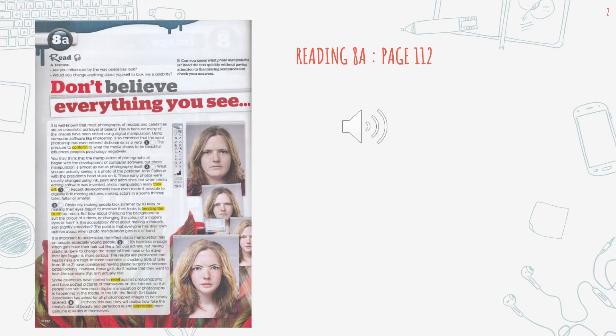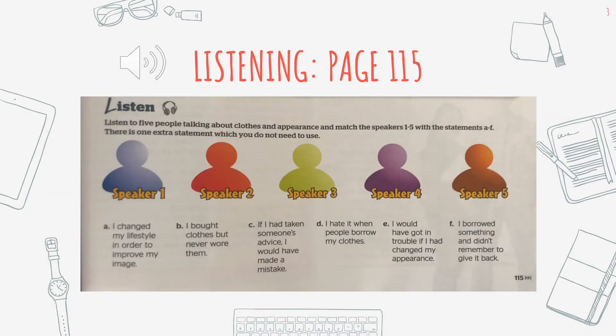However, these girls don't realize that they want to look like someone that isn't actually real. Some celebrities have started to rebel against photoshopping and have posted pictures of themselves on the internet so that people can see how much digital manipulation of photography is happening in the media. In the UK, the British Girl Guide Association has asked for all photoshopped images to be clearly labeled — perhaps this way they will realize how fake the media's idea of beauty and perfection is, and appreciate more genuine qualities in themselves.